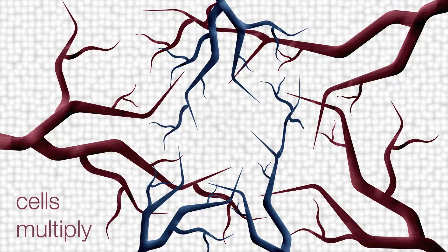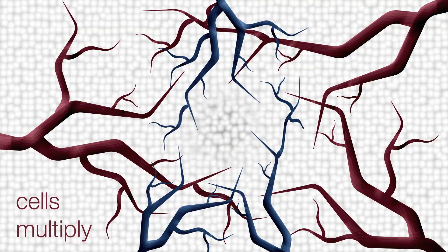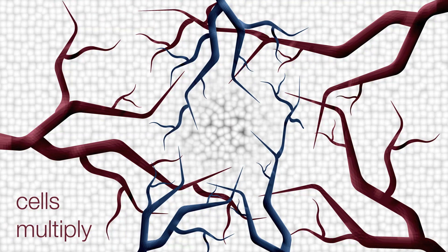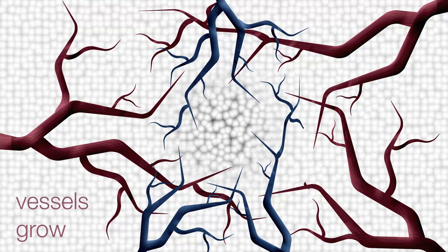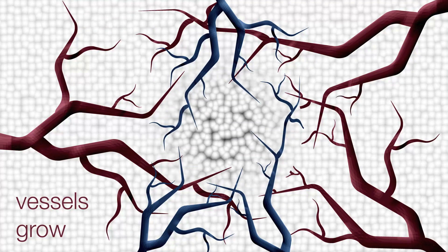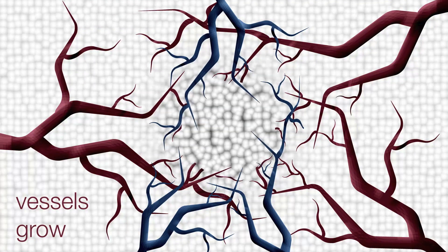Tumors grow when cells accumulate several mutations that allow them to replicate uncontrollably. To feed this growth, tumors stimulate recruitment of vessels that are typically badly distributed and abnormally small, tortuous, and leaky.